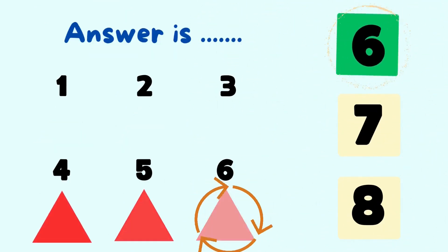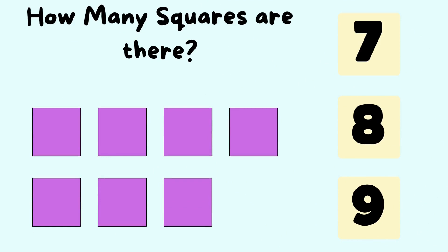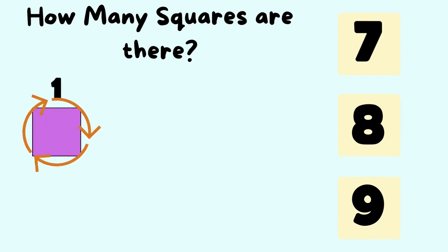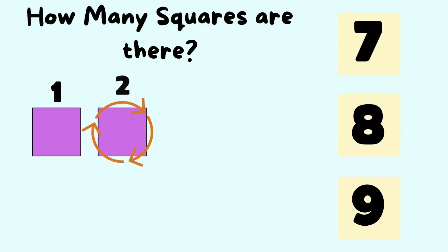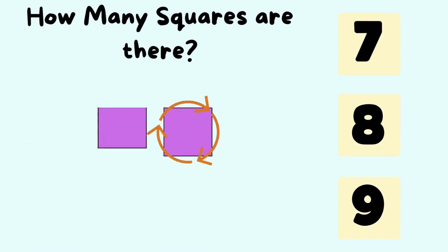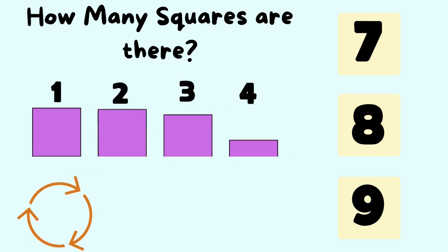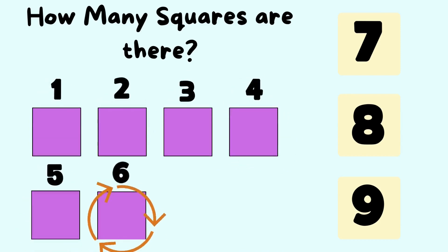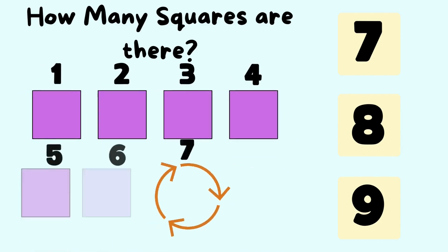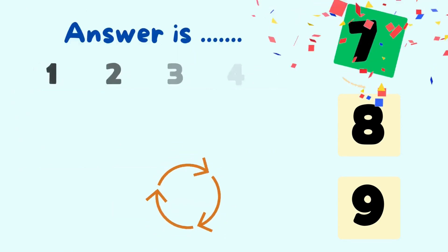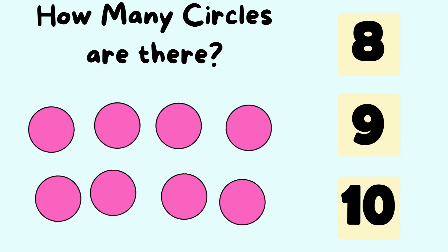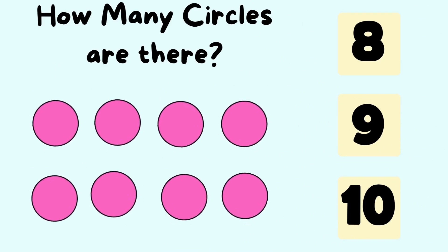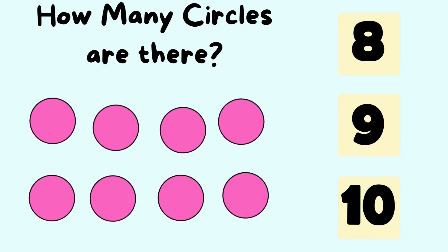How many squares are there? Let's count the number of squares. It is one, two, three, four, five, six, seven squares. So the answer is seven squares.